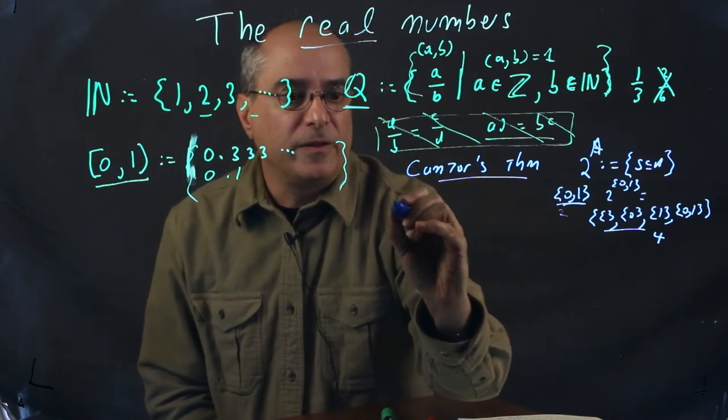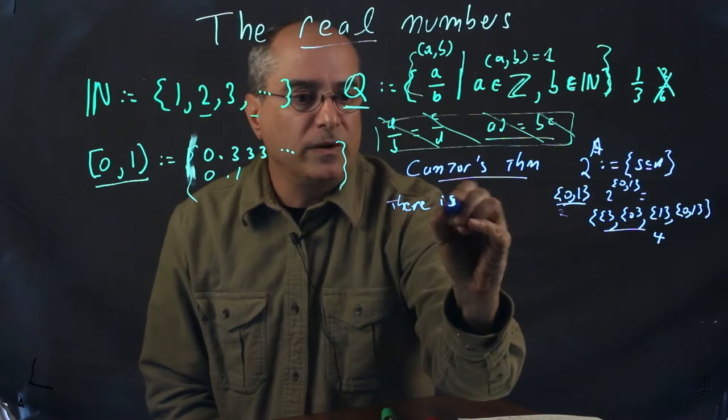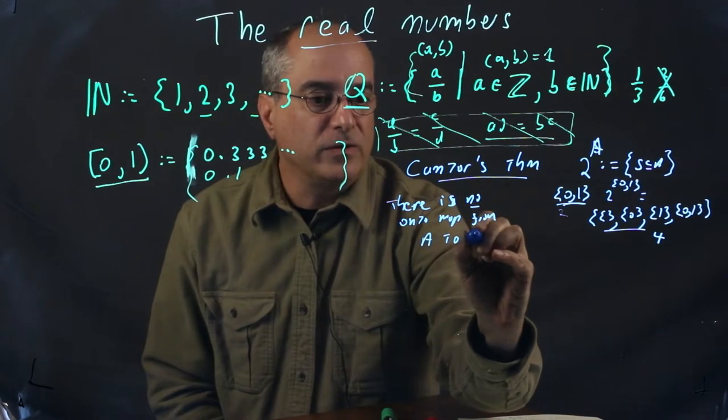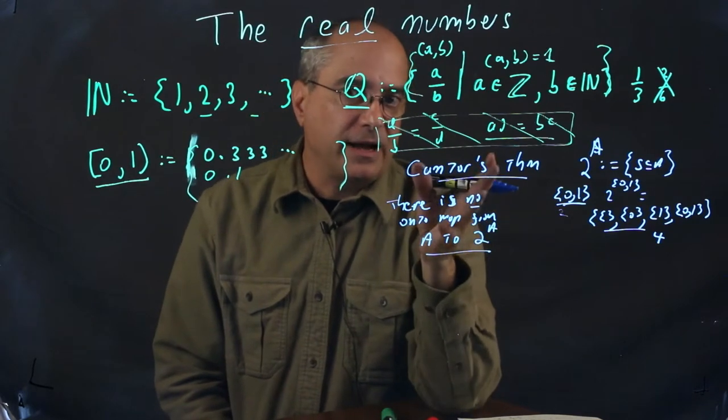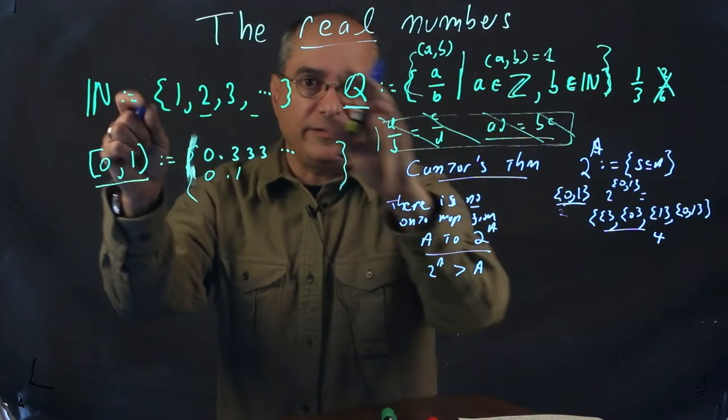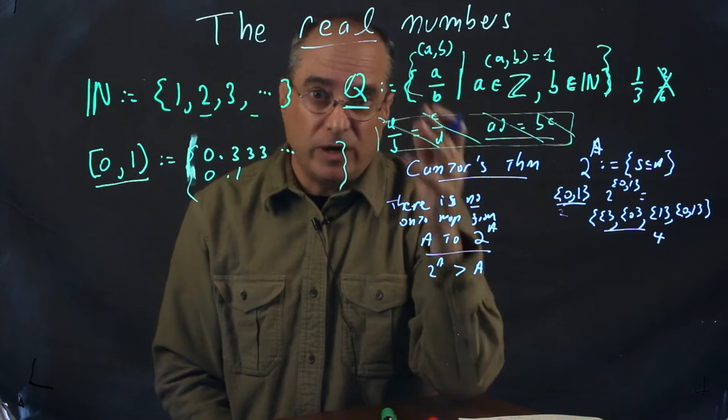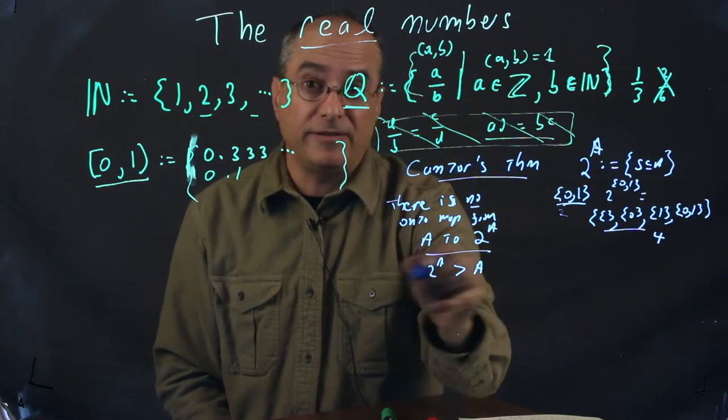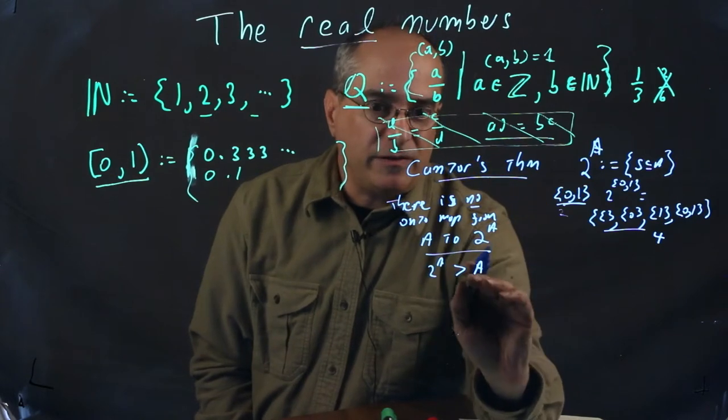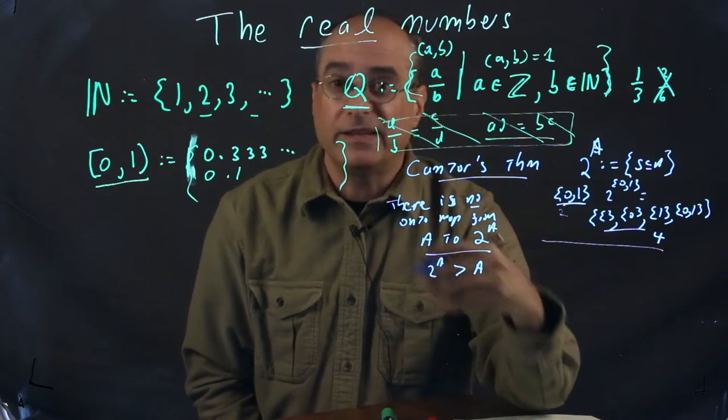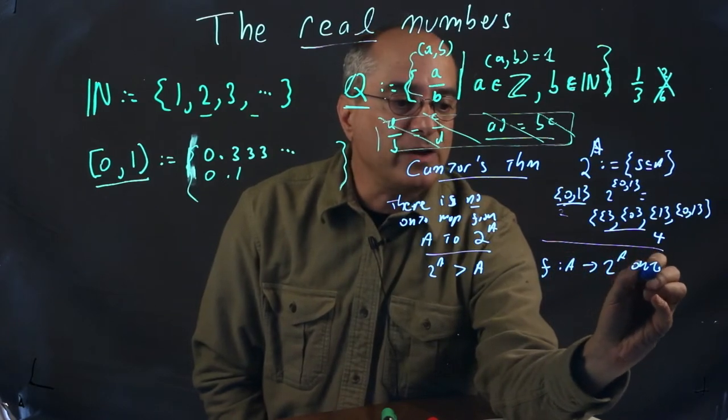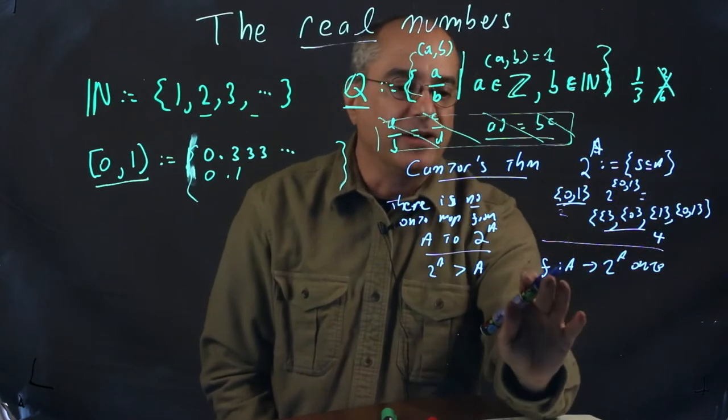Cantor's theorem is that there is no onto map from A to 2 to the A. We interpret that as being 2 to the A is larger than A. Because we said two sets have similar sizes if one can be mapped onto the other. If one cannot be mapped onto the other, then the one we can't map onto is larger. That's an interpretation of this statement. So how do we prove that? Well, it's a really cute little proof. We say, if there is such a map, exhibit it. So we force the hand of the person making the claim. We say, well, suppose there is an f from A to the 2 to the A onto. And we don't care if it hits sets multiple times. That's fine. Let it overcount. We say that it can't even hit all of them.